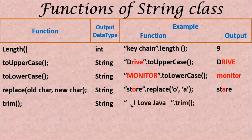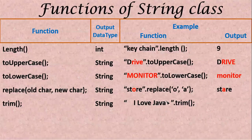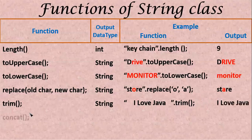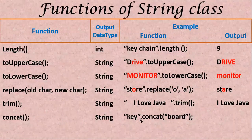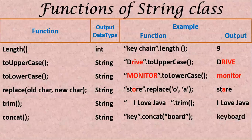For trim(), for example, I have given some space, then "I love java", then some more space. What it will do is cut all the extra spaces before and after the string, so it starts from I and ends with a — the extra spaces before and after are trimmed. Next, concat() — the output is String type. For example, "key" dot concat("board") — these two are added together and displayed as keyboard.